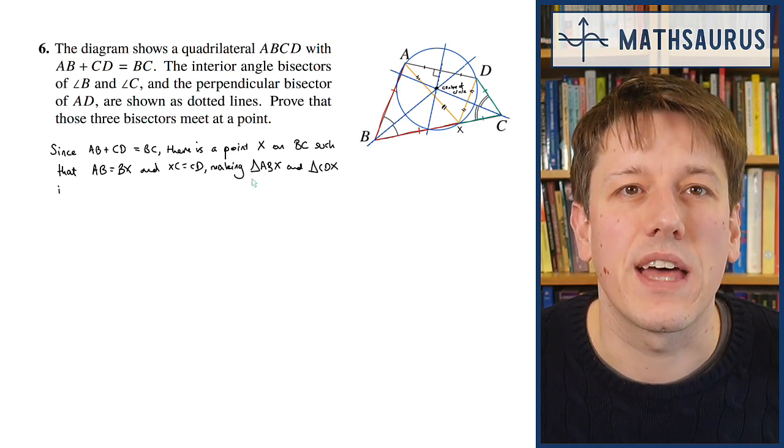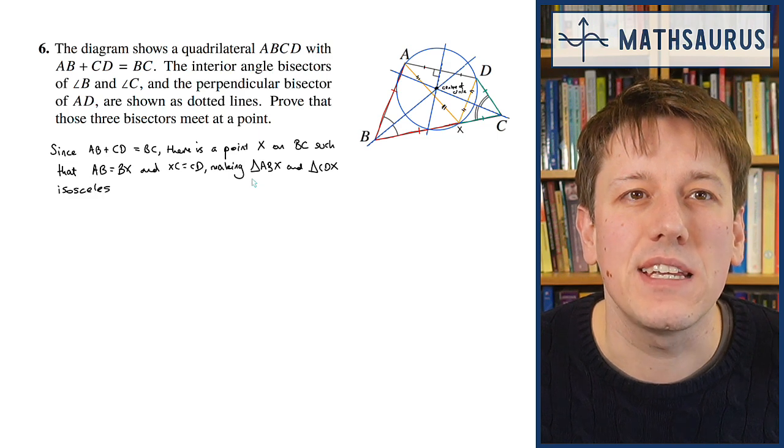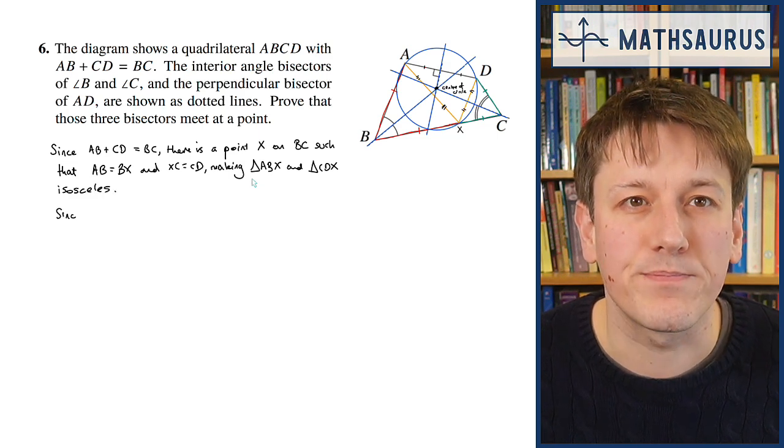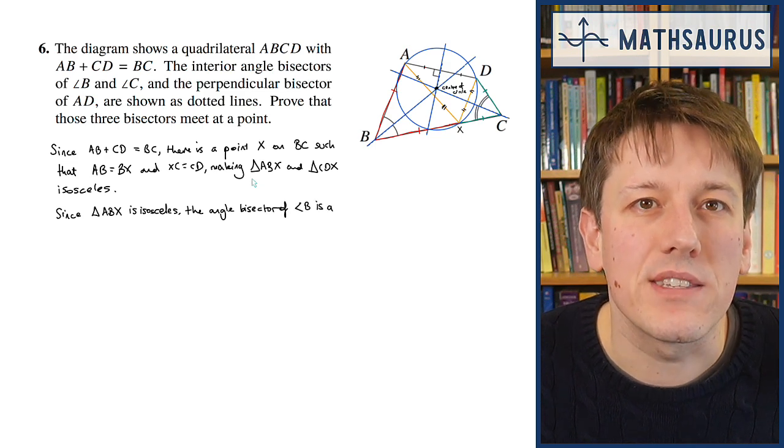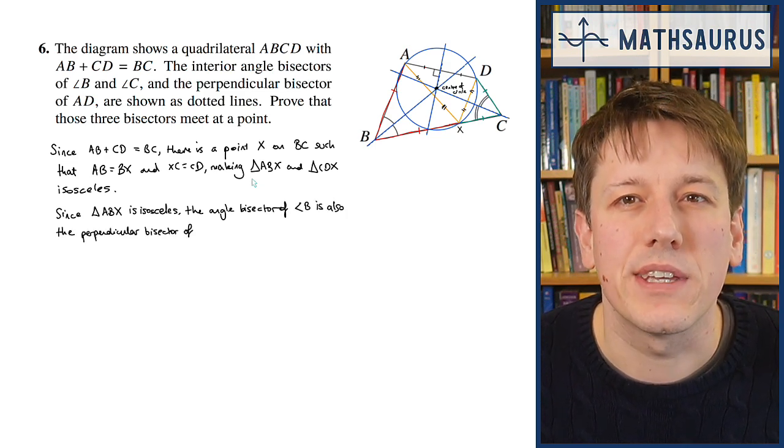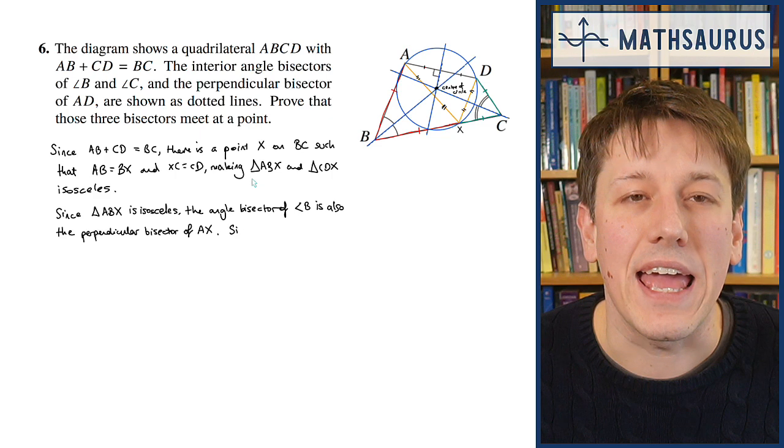That means the triangles ABX and CDX are both isosceles triangles. Since triangle ABX is isosceles, the angle bisector of angle B is also the perpendicular bisector of AX.